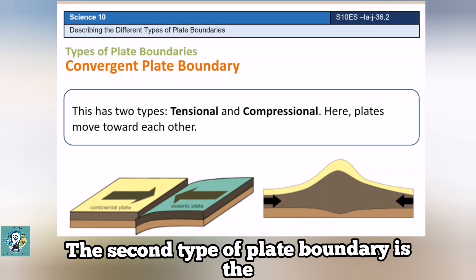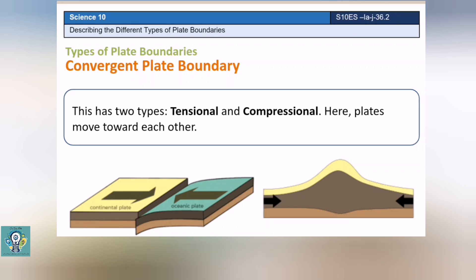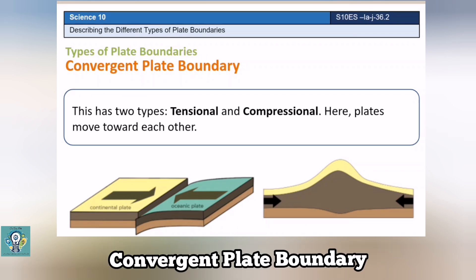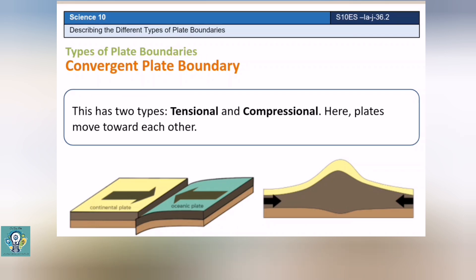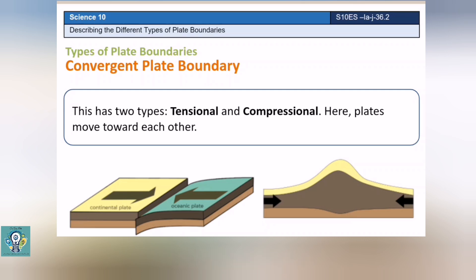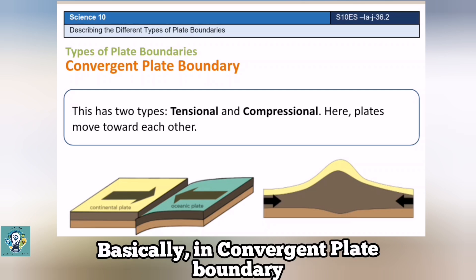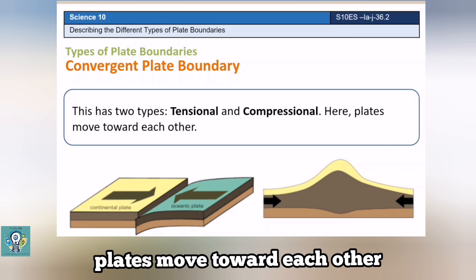The second type of plate boundary is the convergent plate boundary. It has two types: tensional and compressional. Basically, in convergent plate boundary, plates move toward each other.